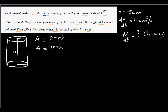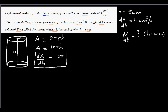Think about whether the rate of change is constant or changing. Since area is dependent on height, we can differentiate it. So dA/dH = 10π. This tells us that the rate at which area changes with respect to height is constant — it is 10π.